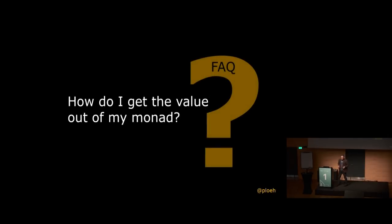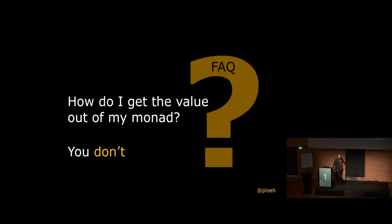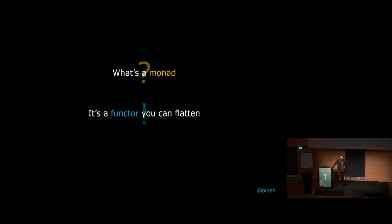We get this a lot in functional programming — people ask questions that generalize to 'how do I get the value out of the monad?' The short answer is: you don't. I should tell you what a monad is, since it has a lot of mysticism around it. It's not that hard to understand. In short, a monad is a functor you can flatten. To understand that, we first need to understand what a functor is.